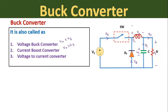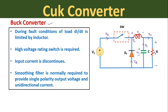Now let us see some important features related to the circuit diagram of this buck converter. First point: during fault conditions of the load, di/dt is limited by the inductor. In the circuit diagram of the buck converter, we have connected one inductor on the load side. Whenever there is a fault in the load, a heavy current flows through the load to the ground, and this heavy current will be limited by the inductor present at the output side.